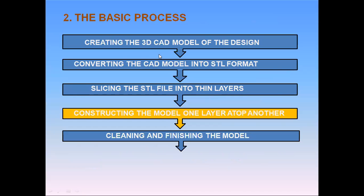The basic process of rapid prototyping is as follows: first, we create a 3D model of the design using CAD softwares like CATIA, Pro/E, etc. Then we convert that CAD model into STL format. The third step is slicing the STL file into thin layers. After that, we construct the model one layer on top of another, adding material layer by layer. The final step is cleaning and finishing the model.